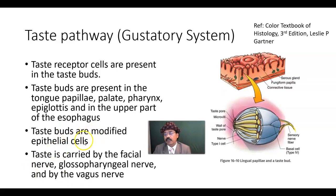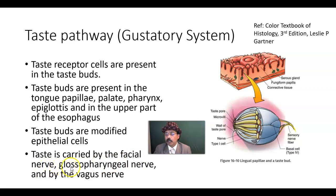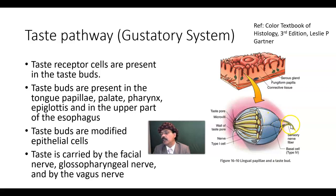The taste buds are modified epithelial cells. They are ectodermal in development. Taste sensation is carried by the facial nerve (the 7th cranial nerve), the glossopharyngeal nerve (the 9th cranial nerve), and the vagus nerve. These taste buds — epithelial cells — are connected to the sensory nerve fiber: the 7th, 9th, and 10th cranial nerve.